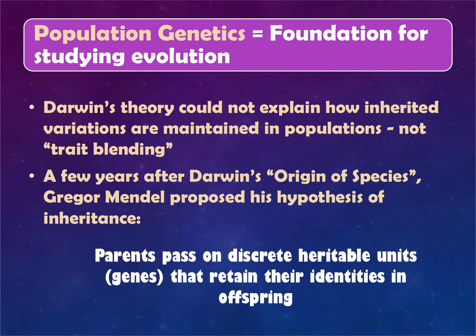When we talk about evolution, we talk about population genetics — the genes found in a population — because that determines which traits show up. Darwin didn't have a good grasp of genetics; he could discuss traits being passed from parent to offspring but didn't understand inheritance, genes, or alleles. He used terms like 'trait blending.' The actual genetic understanding came later with Gregor Mendel. We now know parents pass heritable units called genes to offspring, and that's how beneficial traits get passed from one generation to the next.